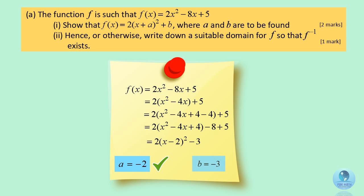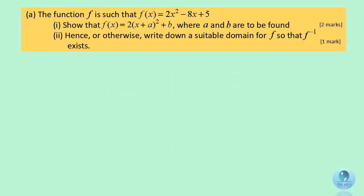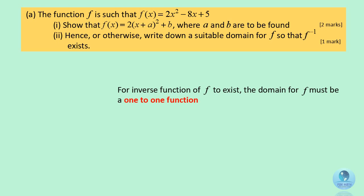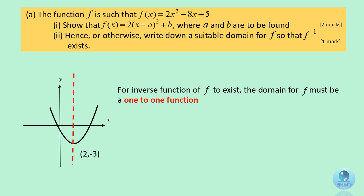Hence, your a is equal to negative 2 and your b is negative 3. For part 2, you are asked to write a suitable domain for the function f so that the inverse function of f exists. For the inverse function to exist, the domain must be a one-to-one function. As we can see from the graph, the domain for x is when x is greater or equal to 2, or x is lesser or equal to 2.